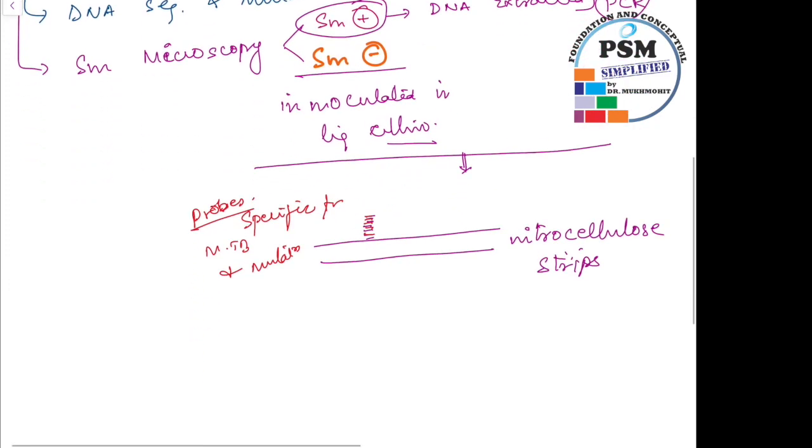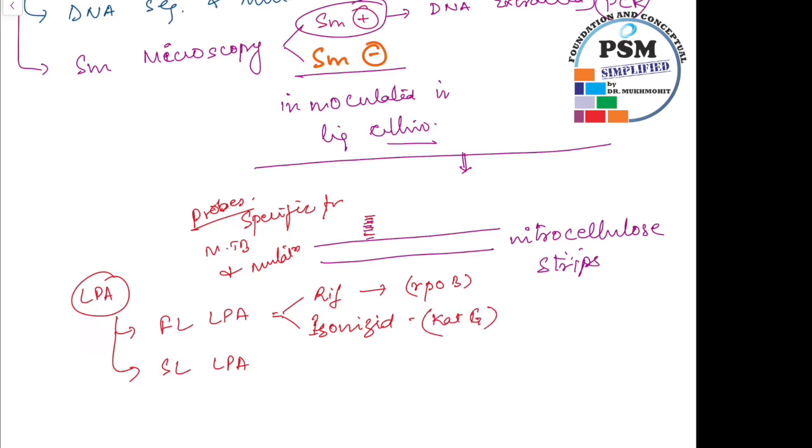So there are two types of line probe assay. We can have the first line line probe assay or we can do the second line line probe assay. The first line line probe assay will have probes which are specific to the resistance to rifampicin and isoniazid. Rifampicin, we already talked, is the RPOB gene, and isoniazid is the CATG or the CAG gene or the INHA gene. These two mutations cause isoniazid resistance.